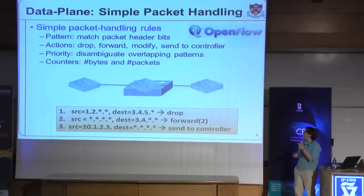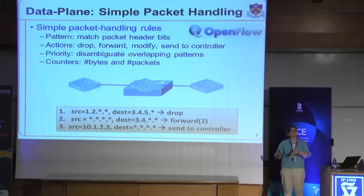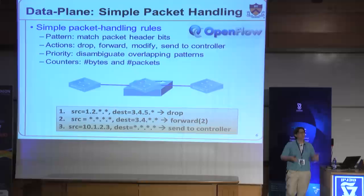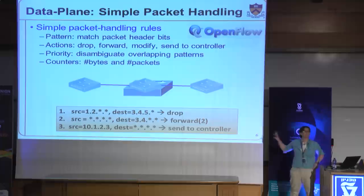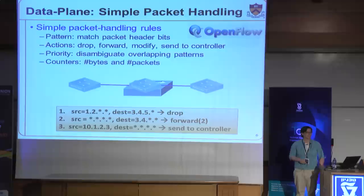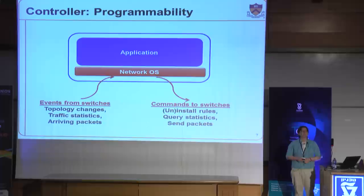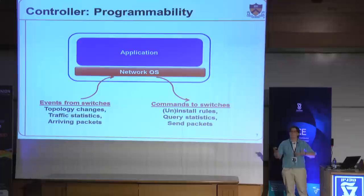In addition, there are usually counters associated with each rule giving you the number of bytes and packets that match that rule. An OpenFlow switch takes packets in, finds the highest priority matching rule, applies the actions associated with that rule, and increments the counters. Newer versions of OpenFlow support a wider range of header fields, a wider range of actions, and even multiple levels of tables in a pipeline. The API primarily allows you to install and query rules, uninstall rules, and see events from the underlying network. Most of the higher level action takes place on the controller, which you can think of as running a sort of network operating system.